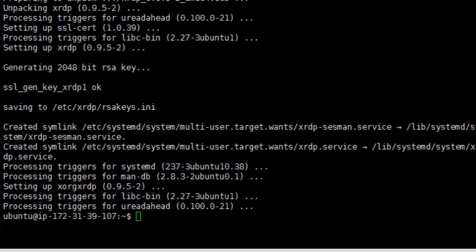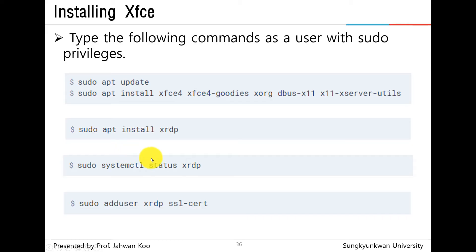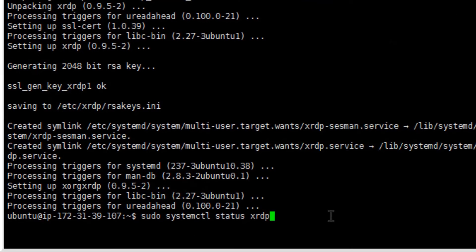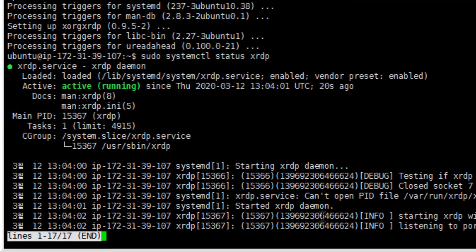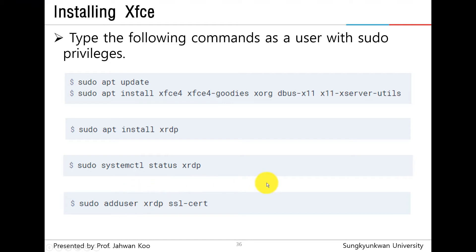As you can see, the installation process is complete. XRDP service will automatically start, so you can verify that XRDP is running by typing sudo systemctl status xrdp. XRDP service is active and running. And then add user XRDP into the SSL cert group.